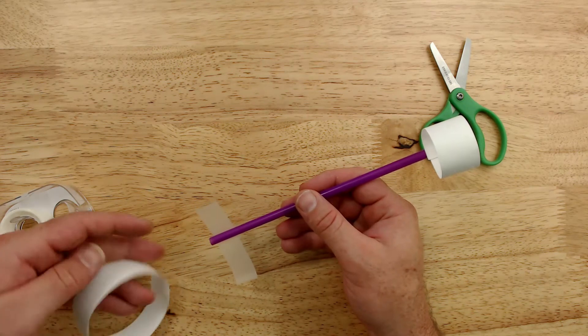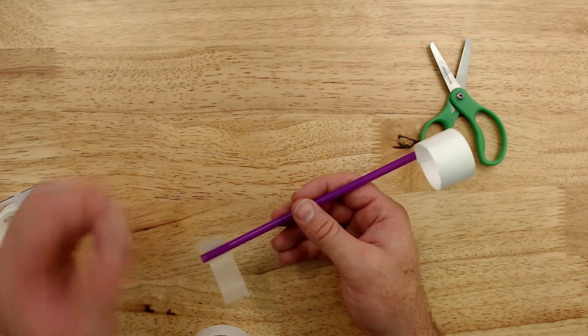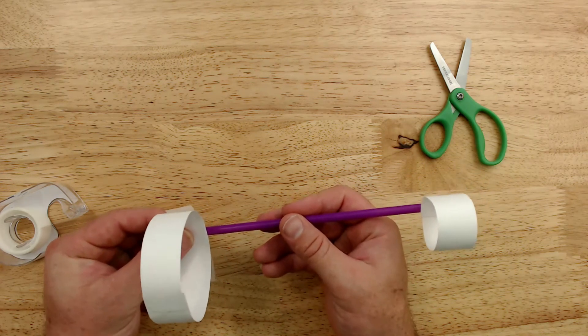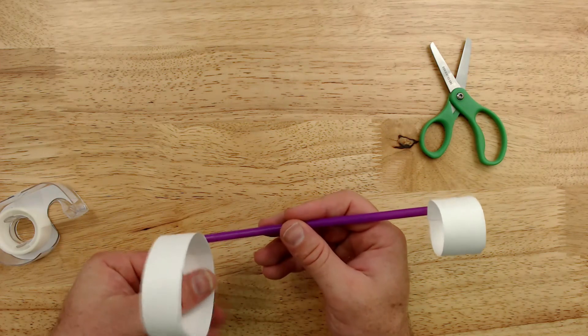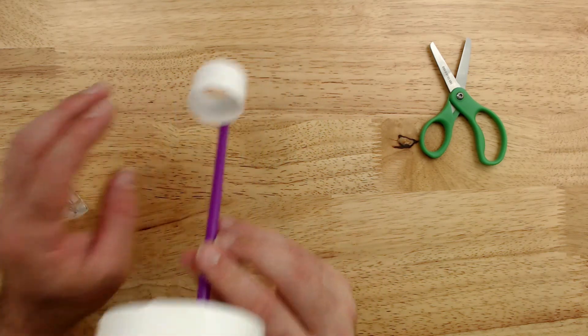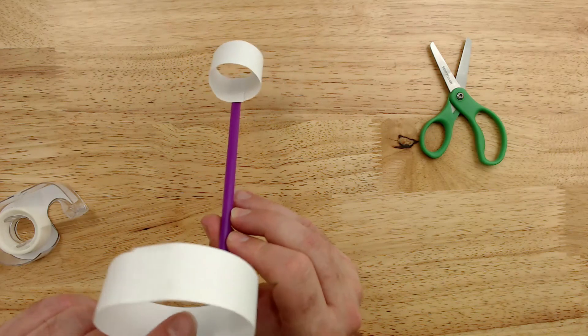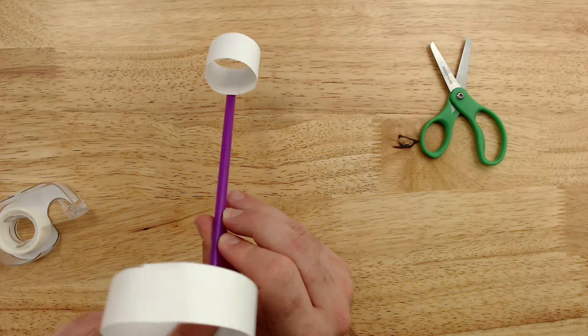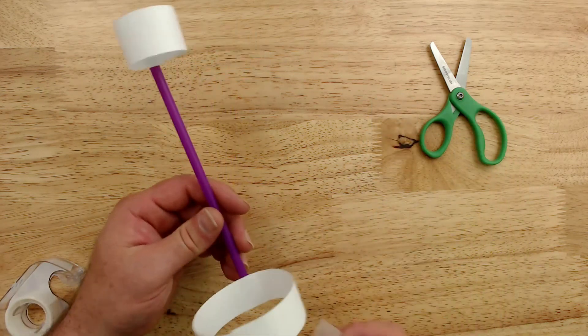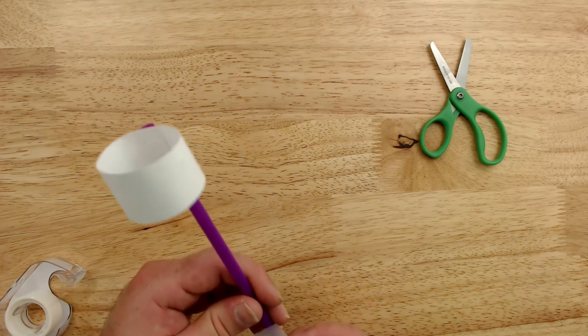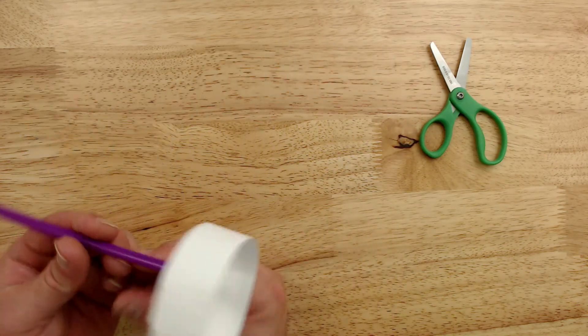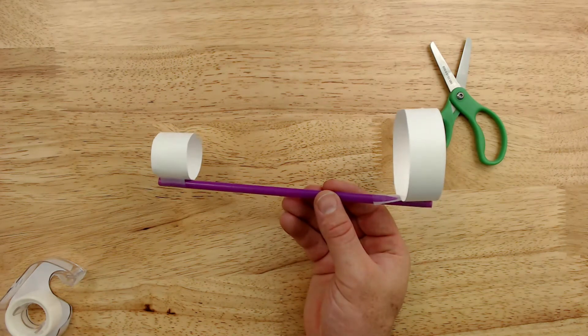Sometimes it's easier to put the tape on the straw first and then attach. When you look down, if the hoops are a little loose, you can take a little piece of tape and stick it on the top here. Okay, there, now it's much more sturdy. So now we have our hoop glider.